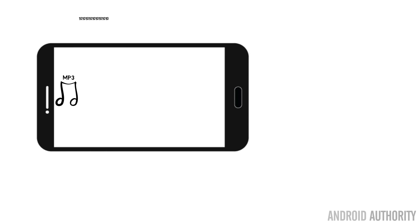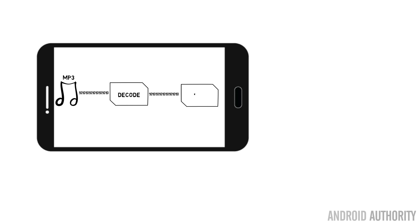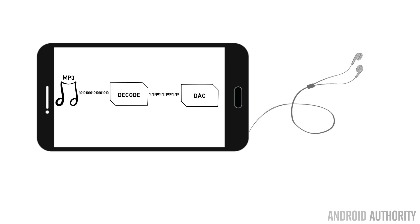That uncompressed audio stream will then go through what's called a digital to analog converter — a DAC — and that DAC produces the analog signal which powers your headphones. The quality of that DAC determines how well that audio signal is produced, and different DACs have different capabilities.